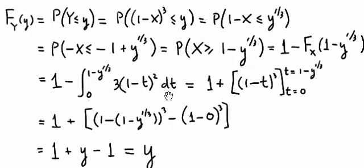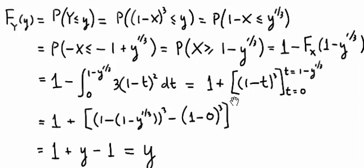In integrating that, we get 1 minus t all cubed, but then we also have a negative sign, so that negative outside of the integral becomes a positive, so we end up with 1 plus 1 minus t all cubed. We evaluate that at t equals 0 and t equals 1 minus y to the 1 third power.